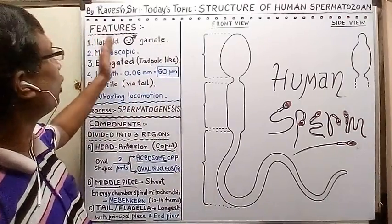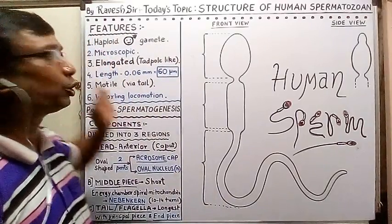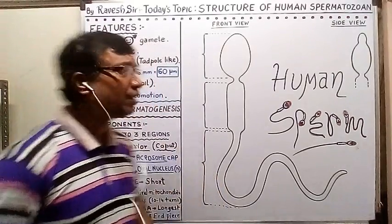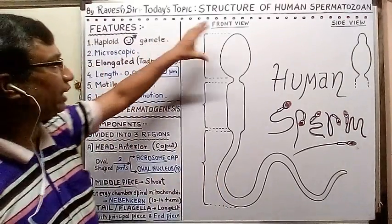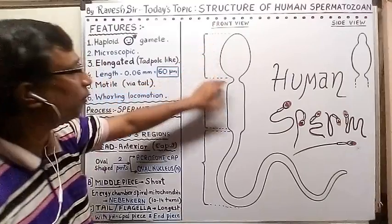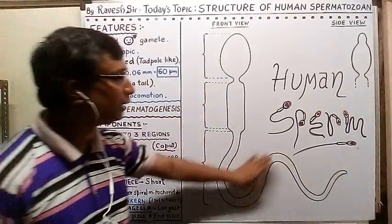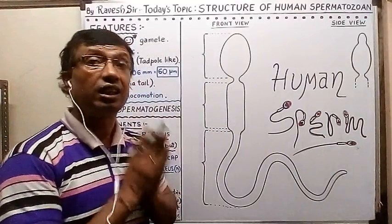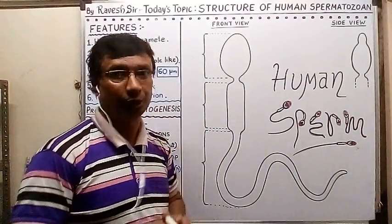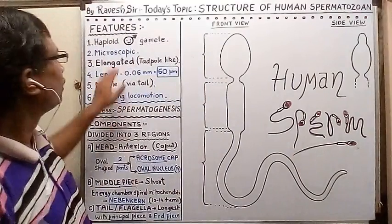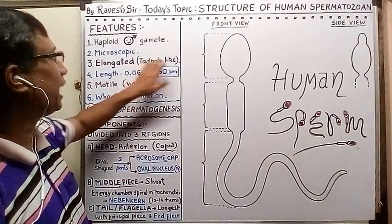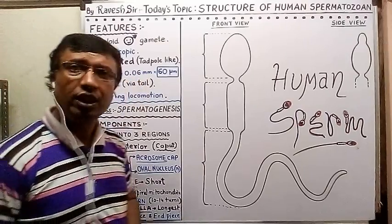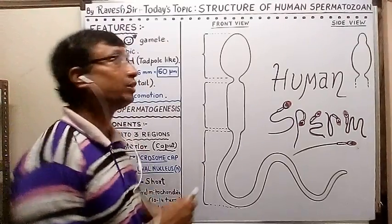The human sperm is the haploid male gamete. It is microscopic, and compared to the ovum it is much smaller. You can see the shape is elongated — the outline of the sperm looks like a tadpole. The length is 0.06 millimeters.